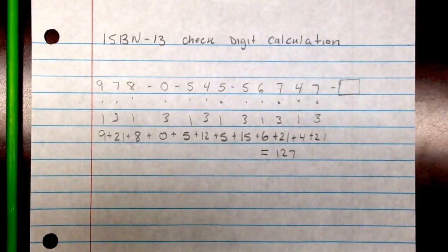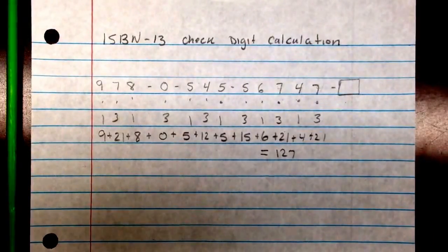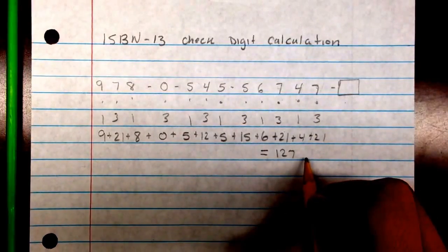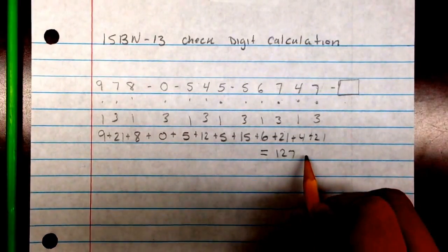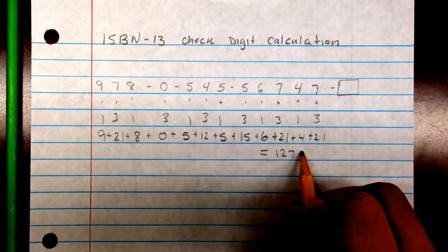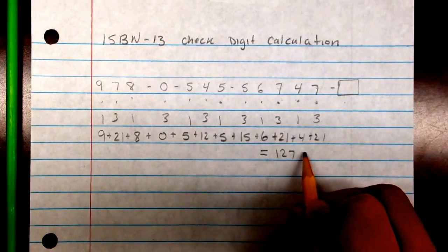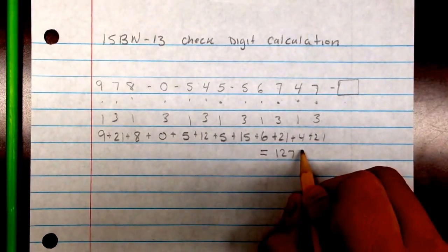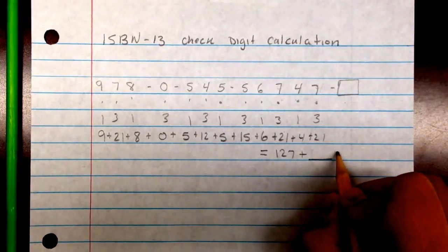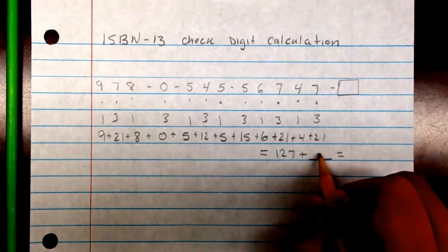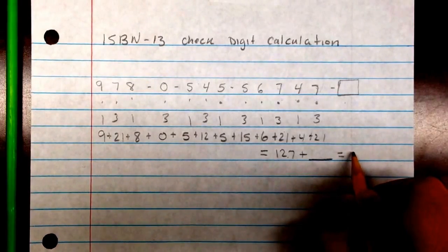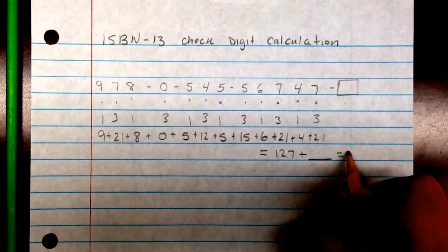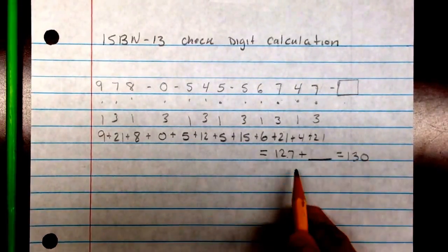So now, this is a mod 10 system, like the UPC number is, unlike the normal ISBN-10 system. Some people divide by something just to get a remainder, but I think it's easier with mod 10 to just figure out what you need to add to this number to get the next highest multiple of 10, which is in this case 130.